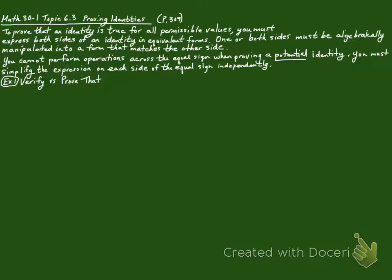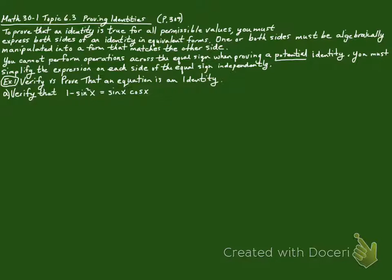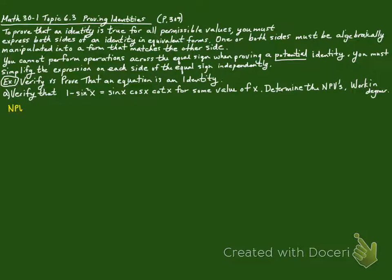Example 1: Verify versus prove that an equation is an identity. We want to verify that 1 minus sine squared of x is equal to the sine of x times the cosine of x times the cotangent of x for some value of x. Determine the non-permissible values, and they want us to work in degrees.